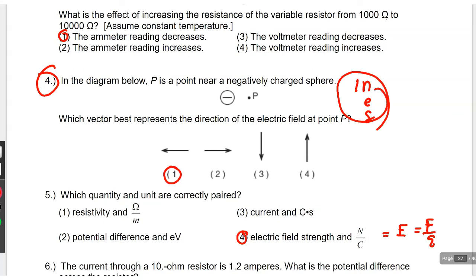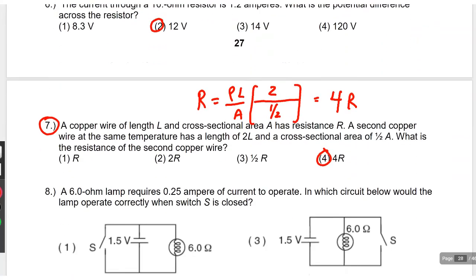All right. Number 4, N for negative, right? This is a negative charge. So, the arrows go in. And that's why it's this one right here. Okay. Here's a great question.